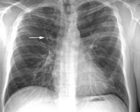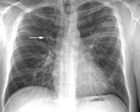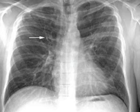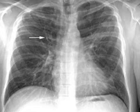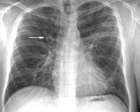In bronchiectasis, the medium and smaller sized bronchi and bronchioles are damaged. Their ciliated epithelium is destroyed by inflammation and scarring, which in a vicious cycle of infection and further scarring leads to permanent dilatation and bronchial wall thickening. The mucous lining of these airways becomes colonized by bacteria and generates copious amounts of purulent and often offensive sputum.